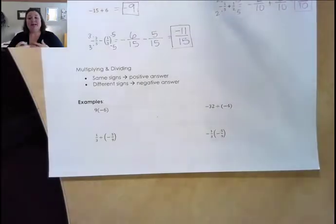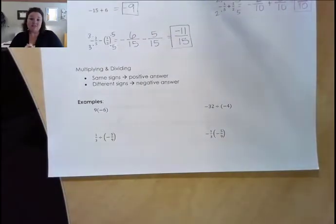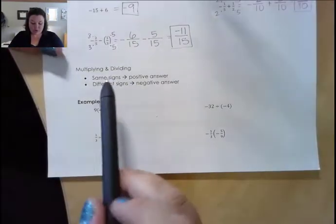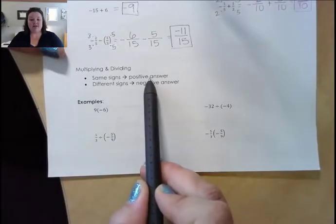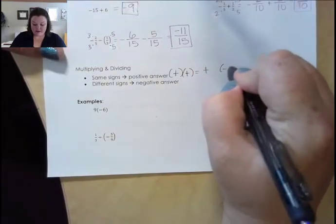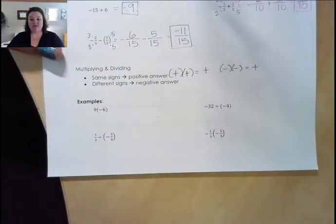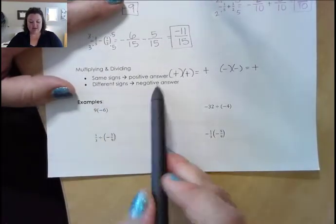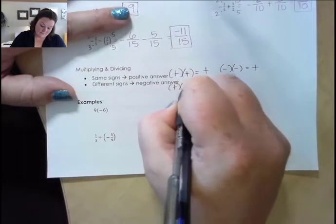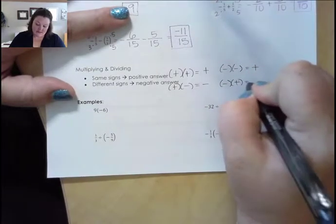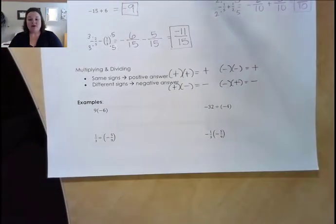Now we want to look at multiplying and dividing with signed numbers — the rules change. When we multiply and divide, we don't need common denominators with fractions. When we have the same signs, the result is positive: positive times positive is positive, and negative times negative is positive. If the signs are different, we get a negative answer — positive times negative, the negative wins. So same signs give positive, different signs give negative.